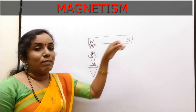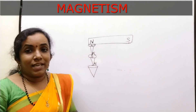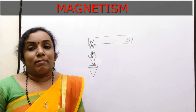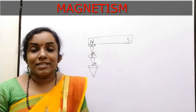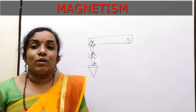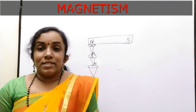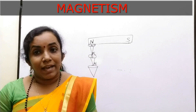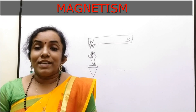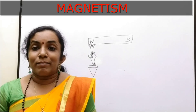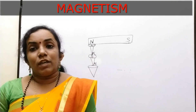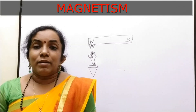Now, if you remove the bar magnet from the nails, you can see all the nails falling down due to gravity. That means when you remove the magnet, the nail loses its magnetism and they detach from each other. So we can conclude that induced magnetism is only temporary. Magnetic induction is the temporary magnetism acquired by a magnetic material when it is kept near a magnet, and the attractive property is lost when the magnet is removed.